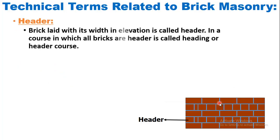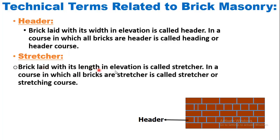What is a header? A brick laid with its width in elevation is called a header. A course in which all bricks are headers is called a heading or header course. What is a stretcher? A brick laid with its length in elevation is called a stretcher. A course in which all bricks are stretchers is called a stretcher or stretching course. In a stretcher the brick is laid along its length, whereas in a header the brick is laid along its width.